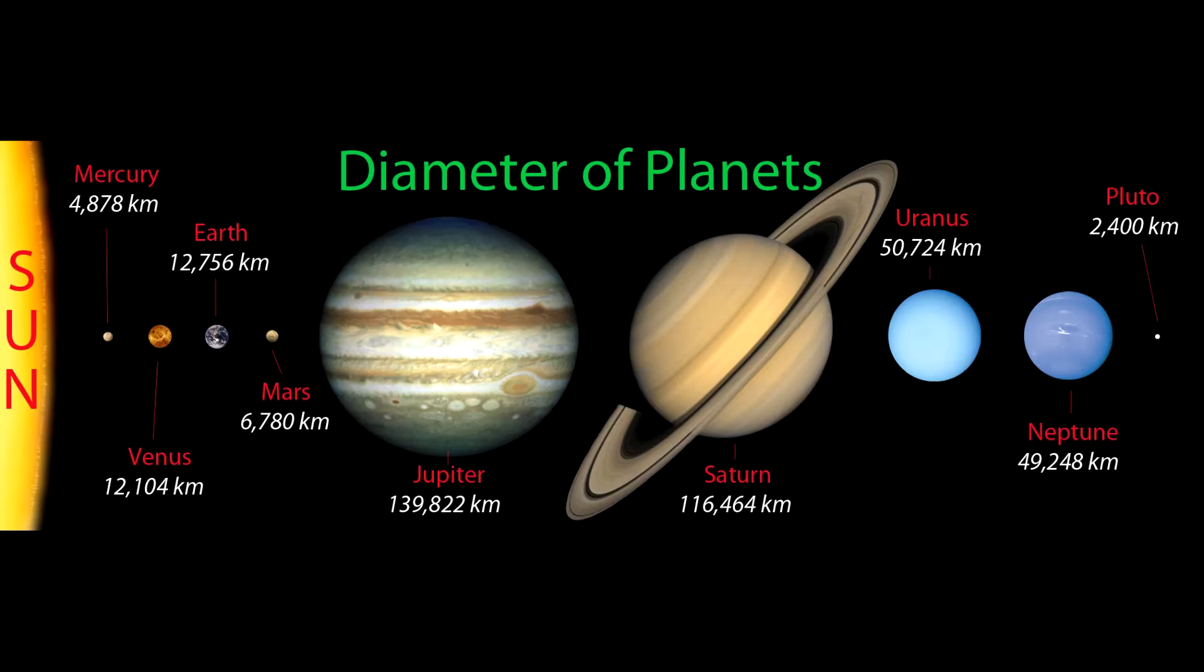The smallest one and the biggest one. Mercury is the smallest planet in our solar system, which has a diameter of 4.8 km, or approximately 3 miles, while the largest planet is Jupiter with a diameter of 140,000 km, or 87,000 miles.